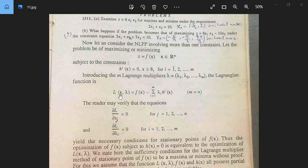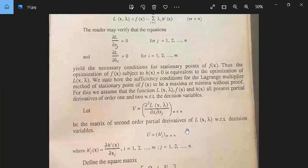Obviously M is less than N. The reader may verify that the equations del L by del x_j equal to 0 for j equal to 1 to N, this number of variables, and del L by del lambda_i equal to 0 for i equal to 1 to M, yield the necessary conditions for stationary points of F(x). If we solve these equations, we will have stationary points.